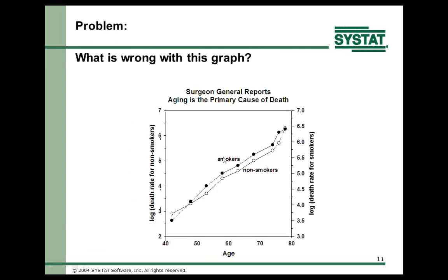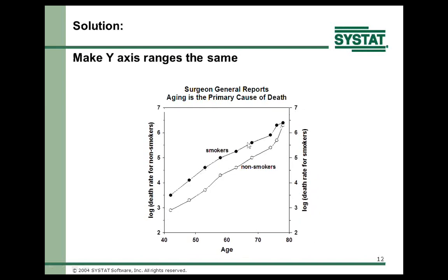What's wrong with this next graph? Here's age along the x-axis and death rate along the y-axis for smokers and non-smokers, and they sort of overlap and come together at the highest age. The mistake is that the multiple axes didn't start at the same values — 2 to 7 versus 3 to 7. Once you fix that, you can clearly see smokers have a higher death rate than non-smokers, which is known.